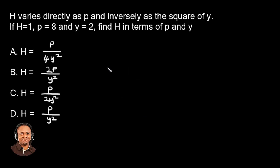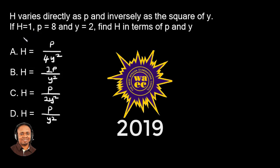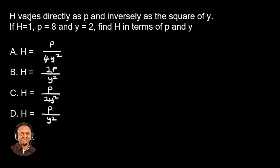Hi, I'm Oluwakemi. I'm so excited to have you here again. This is another WAEC Math Question 2019. And the question goes this: h varies directly as p and inversely as the square of y. If h equals 1, p equals 8 and y equals 2, find h in terms of p and y.